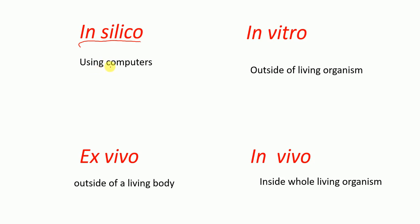So first, what are in silico experiments? In silico experiments are experiments performed using computers or computer programs. Next, in vitro experiments are performed outside of a living organism in a culture system. Ex vivo experiments are also performed outside of a living body, similar to in vitro, but there is a small difference which I'll discuss in later slides.